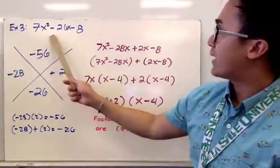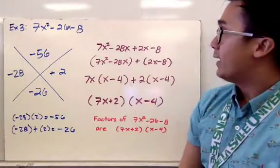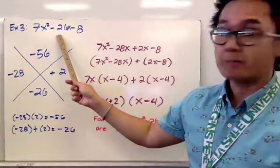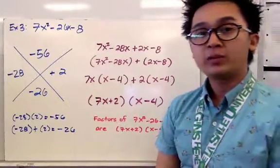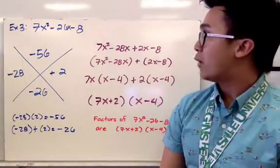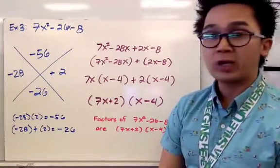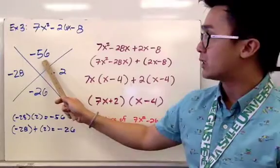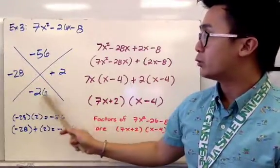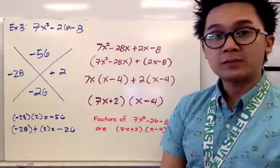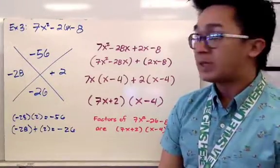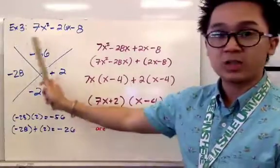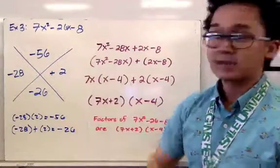For our third example we have 7x squared minus 26x minus 8. We multiply 7 and negative 8 to get negative 56, and use the middle term negative 26 as our guide. The factors we are looking for are negative 28 and positive 2, because negative 28 times positive 2 is negative 56, and negative 28 plus 2 is negative 26.